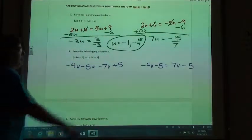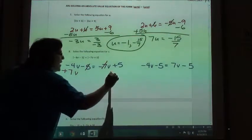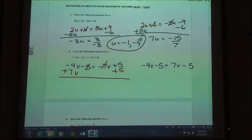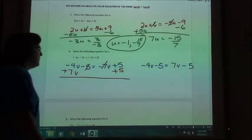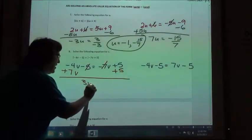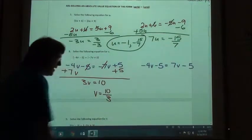So solving that, I am going to go ahead and add my 7v and add my 5 and I would get 3v equals 10, which means v equals 10 thirds, right?